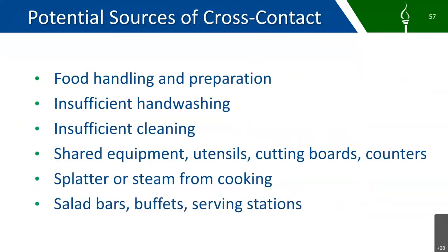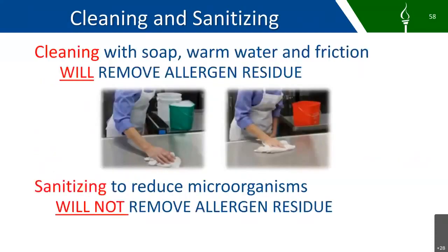Some potential sources for cross-contact include food handling and preparation, insufficient hand washing, insufficient cleaning, shared equipment and utensils or cutting boards or counters, splatter or steam from cooking, and salad bars, buffets, and serving stations. Cleaning with soap, warm water, and friction will remove the allergen residue. Sanitizing will reduce the microorganisms but will not remove the allergen residue, so it's always good to clean first and then sanitize.